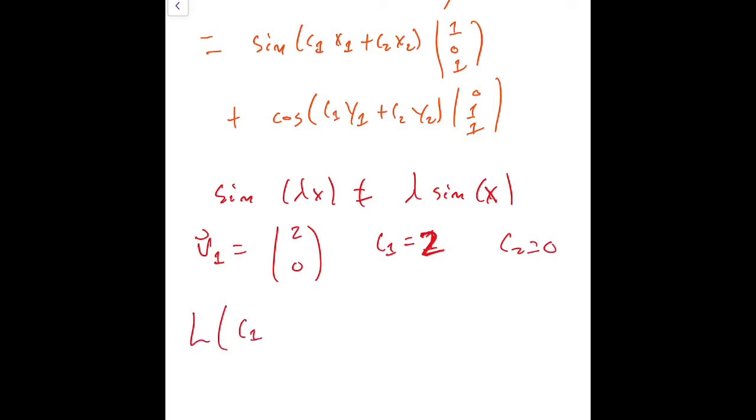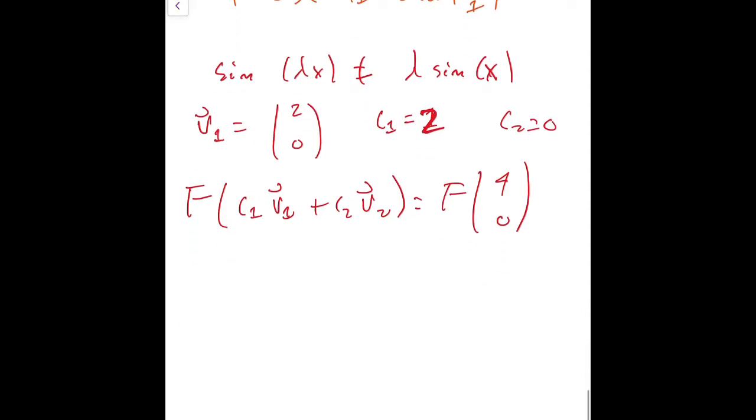So F applied to c1 v1 plus c2 v2 is equal to F applied to the vector (4, 0). And I just remember I'm using the letter f, so let me change that. Well, what is F applied to the vector (4, 0)? Well, this is just going to be sine of 4 times (1, 0, 1).